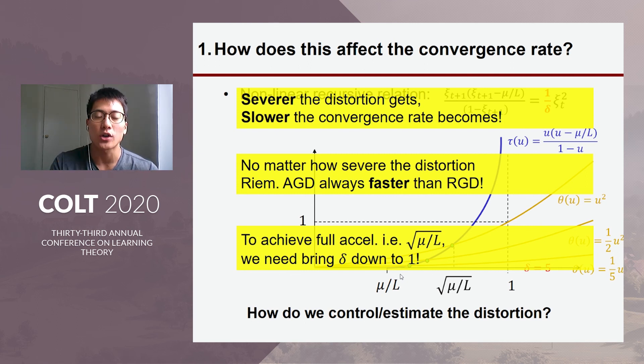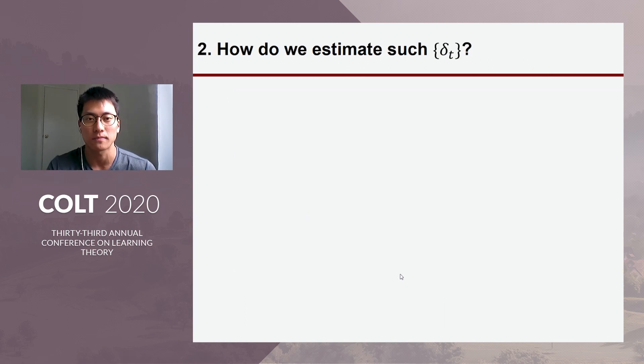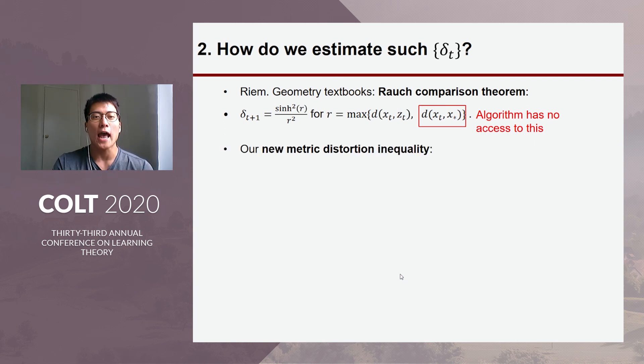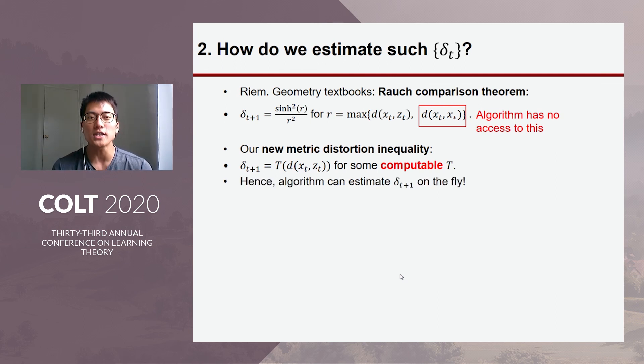And the remaining question is the second question about how we can control and estimate the distortion. So, from the textbook results of Riemannian geometry, there's Rauch comparison theorem, which gives us this following valid distortion rate. But it depends on something we cannot compute, the algorithm cannot compute. So, we had to come up with a new metric distortion inequality, which characterizes the valid distortion rate in terms of completely computable terms. So, which means the algorithm can just estimate the valid distortion rate based off the distances between the previous iterations. So, we can estimate valid distortion rate on the fly. It turns out, with some careful analysis, one can show that this particular choice of valid distortion rate quickly converges to one, which means by the previous slide, the algorithm will achieve the full acceleration.